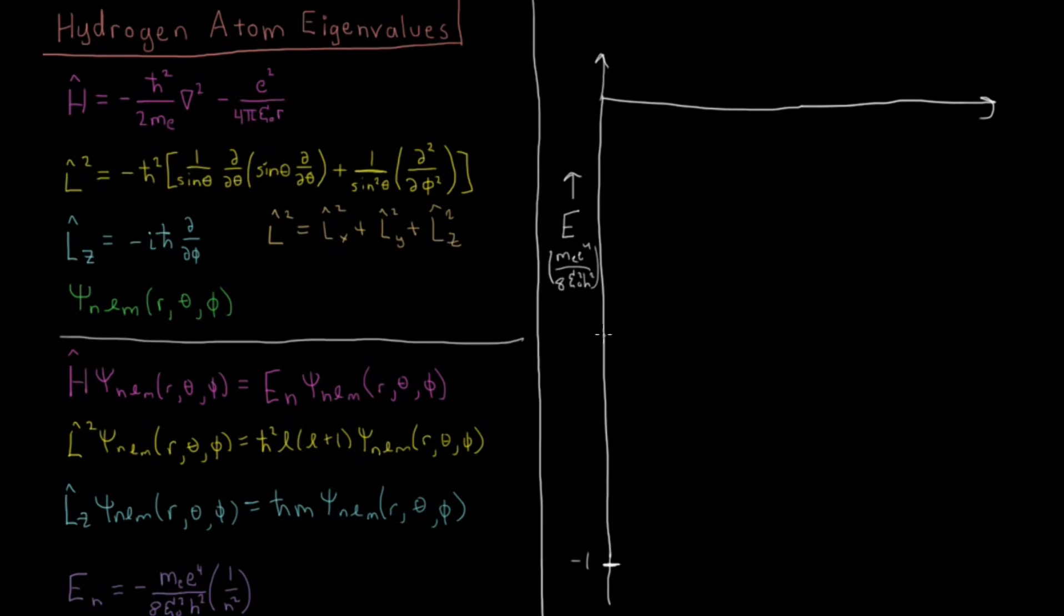So that minus 1 down here is going to be our lowest energy solution. Then we're going to have N equals 2 at 1 4th up there. We have N equals 3 at 1 9th. N equals 4 at 1 16th. So let me just label those. Again, crude and approximate, but not too worried about that.